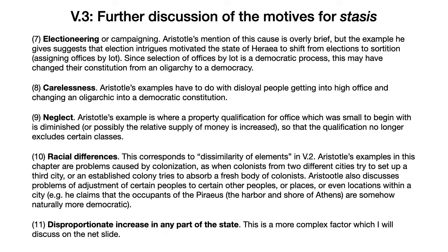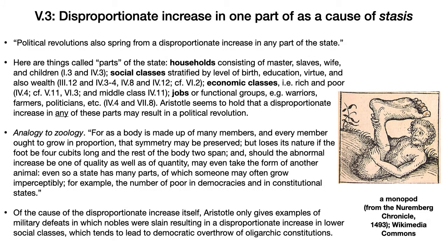Aristotle also discusses racial differences as a motive for stasis, corresponding to what he called dissimilarity of elements in the previous chapter. His examples are problems mostly caused by colonization — when colonists from two different cities try to set up a city together, or an established colony tries to absorb a fresh body of colonists. He also discusses problems of adjustment of certain peoples to certain places or locations within a city — for example, the occupants of the Piraeus, the harbor and shore of Athens, are naturally more democratic than people who are inland or in the citadel.